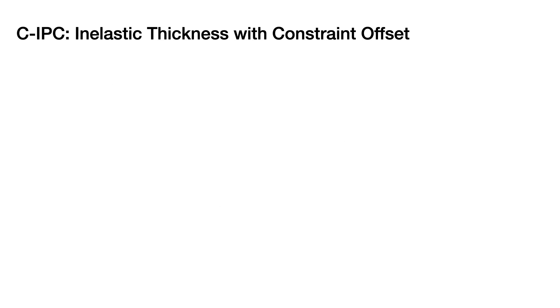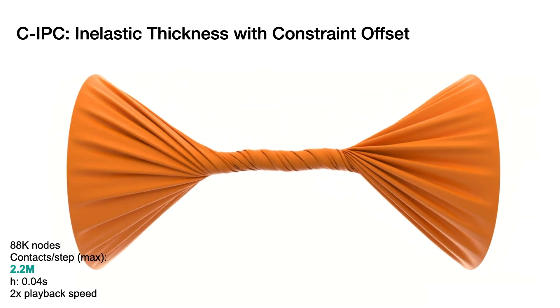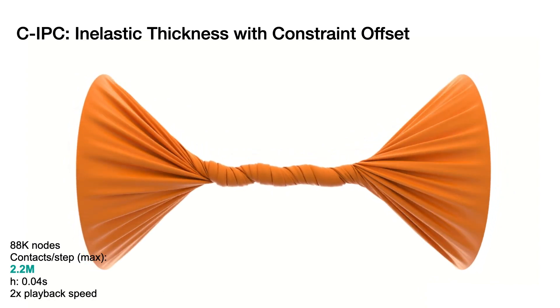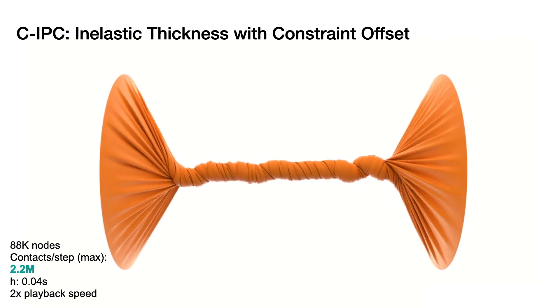Along with non-intersection, CIPC guarantees a finite minimal separation. Together, these ensure that we properly capture thickness even as we simulate the folding and buckling of this codimensional shell model over many long seconds of twisting.